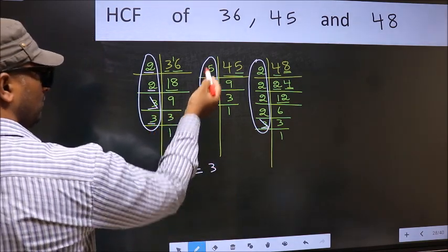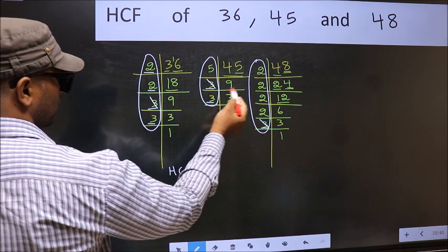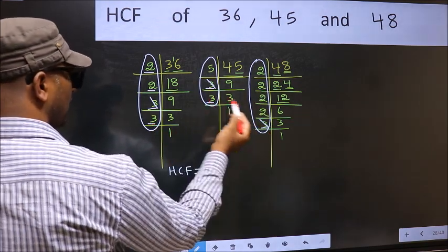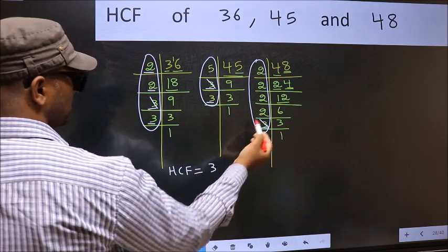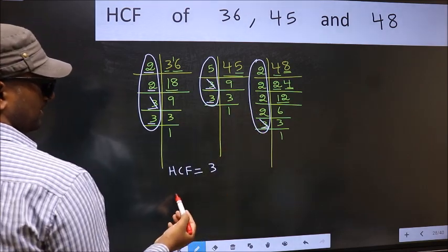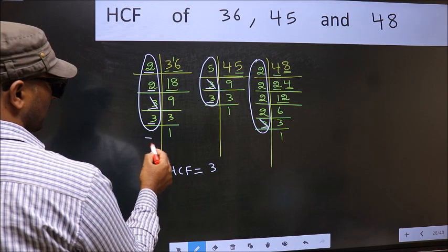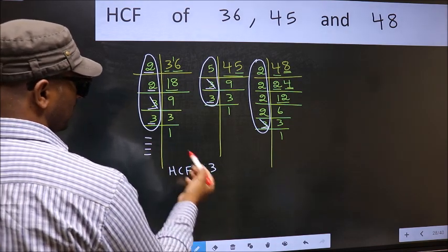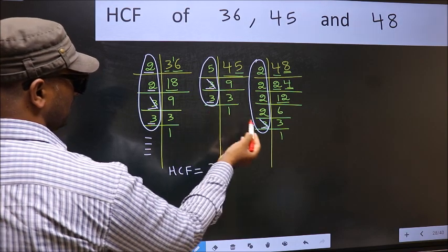Next number 3, do we have 3 here? Yes. Go to the next place. Do we have 3 here? No. 3 we don't have in all the 3 places. So we cannot write here. So no more numbers have been left out. So only one number 3 is present in all the 3 places.